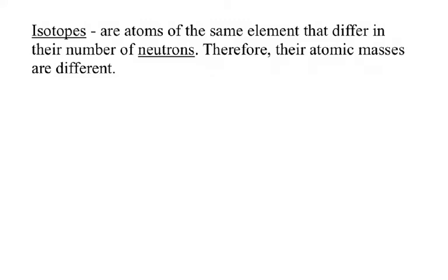Welcome, everyone. What we're going to be doing today is talking about the concept of isotopes. Isotopes are atoms of the same element, but they differ in their number of neutrons. Since neutrons are part of how you calculate the atomic mass, their atomic masses for isotopes will be different.